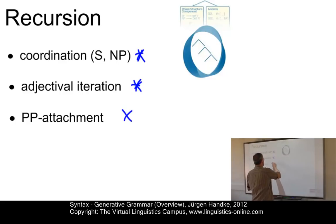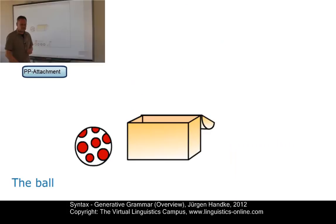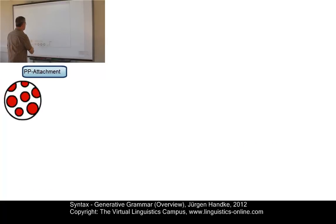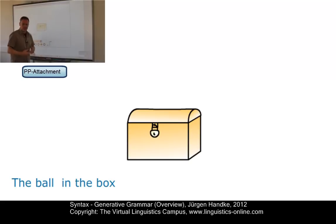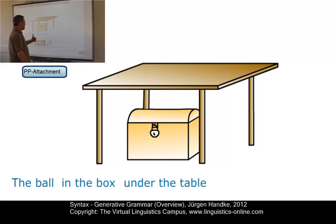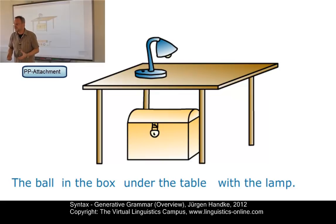The last example is referred to as prepositional phrase attachment. Starting with the noun phrase 'the ball,' a next step gives us 'the ball in the box' — the first prepositional phrase. Then 'the ball in the box under the table,' and continuing further: 'the ball in the box under the table with the lamp.' There is no end to the number of prepositional phrases that can be attached, and the rule is quite simple.